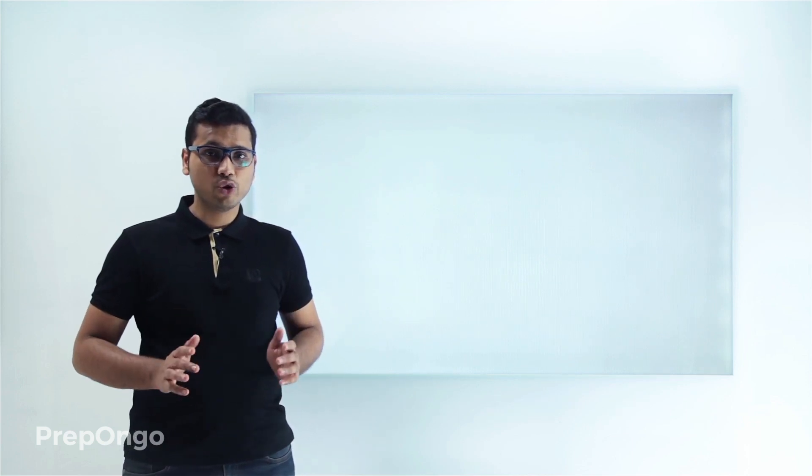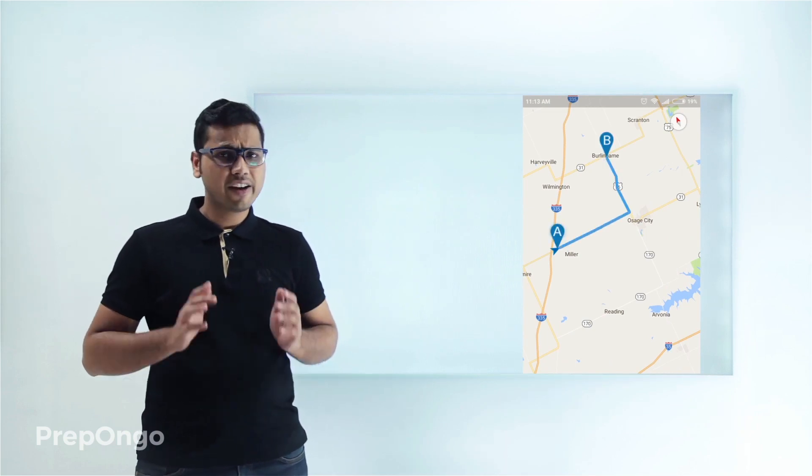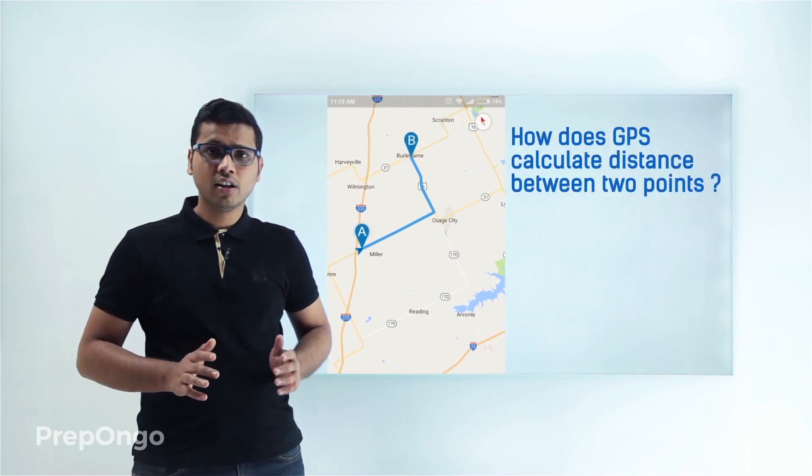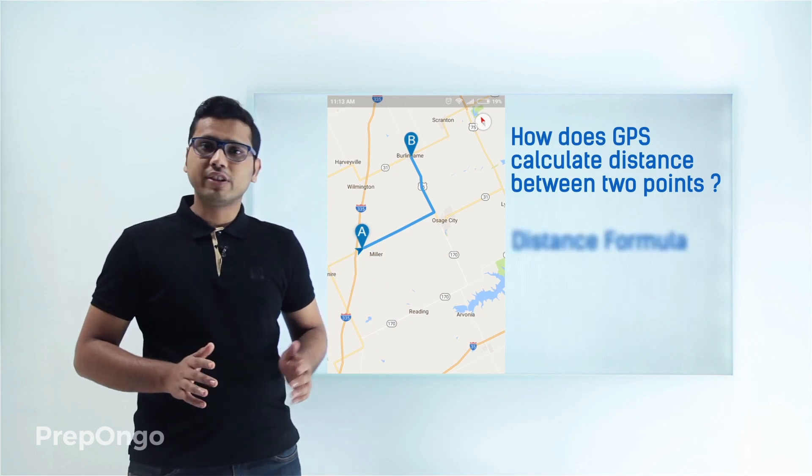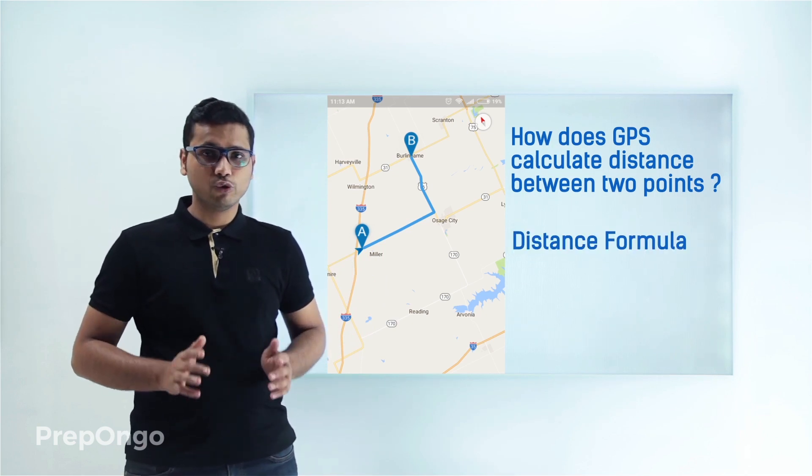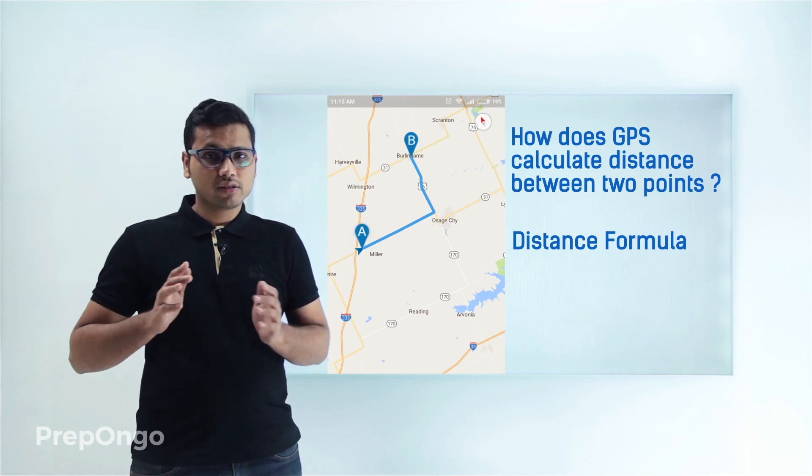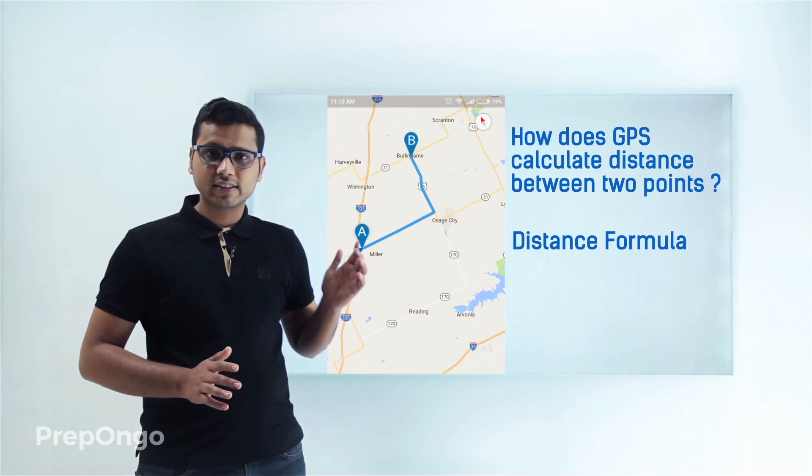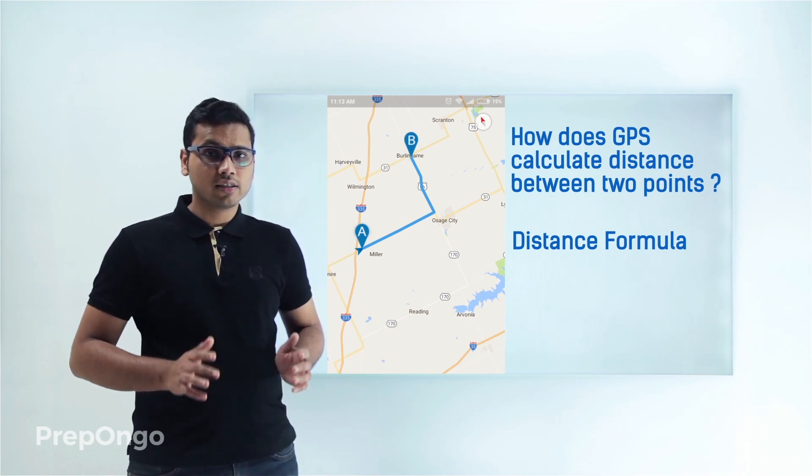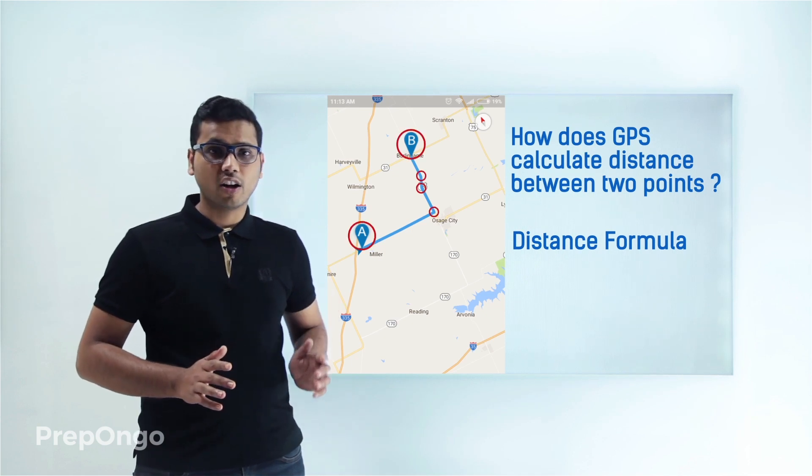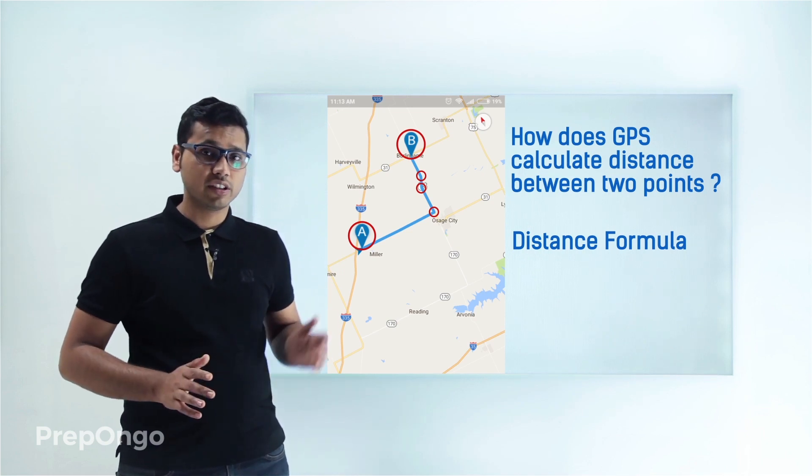You all must have used GPS to find the distance between two points, but have you ever wondered how GPS knows the distance so precisely? We will learn about the distance formula, which is used to find the distance between any two points whose coordinates are given. GPS uses this distance formula to calculate distance between points, and since GPS knows the coordinates of all points, it can easily calculate the distance using this method.